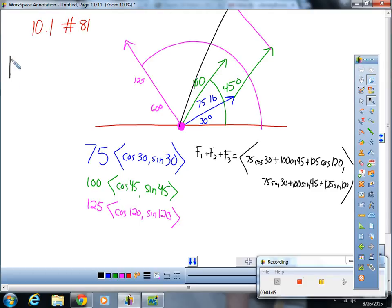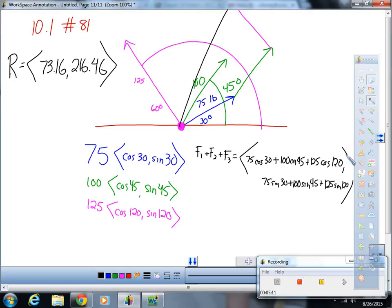Okay, so that's what our big vector is going to look like. Now, let's clean that up. So, we'll call this R for the resultant vector. And I've already done some calculating. So, it ends up being 73.16 comma 216.46. To clarify, I just got these rounded decimals from that. I just popped that in on my calculator.